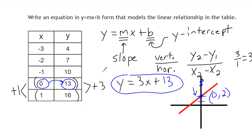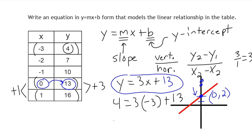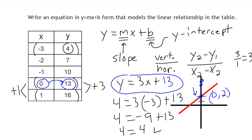How can we check for accuracy? Take any point from the table and plug in the corresponding x and y values into our equation — it should yield a true statement. Let's take the first point and plug 4 in for y, multiply the slope of 3 by x-value negative 3, then add 13. We get 3 times negative 3 equals negative 9, plus 13 equals 4. That matches, so the equation is correct. The same should be true for every pair of points in the function table.